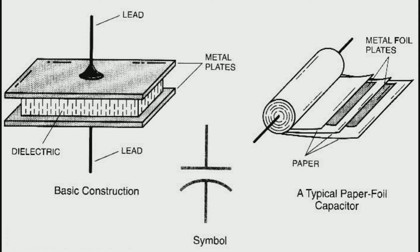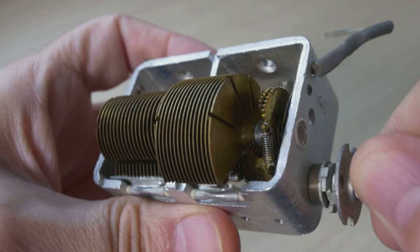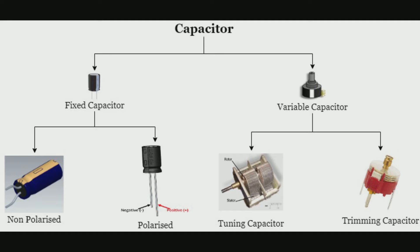Now we will discuss the types of capacitors. Capacitors are generally divided into two common groups: fixed capacitors and variable capacitors. Fixed capacitors have fixed capacitance values, while variable capacitors have variable, trimmer, or adjustable tunable capacitance values. Of these, the most important group is fixed capacitors, which are very commonly used in electronics and electrical circuits.